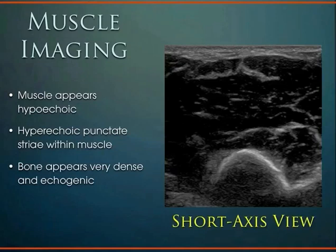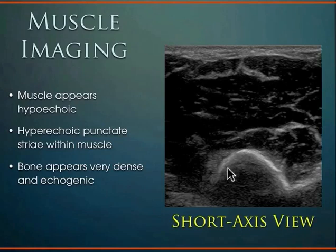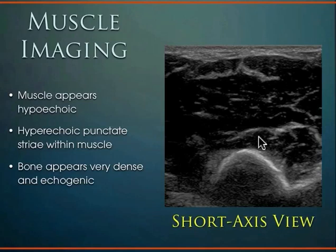In short axis — also called transverse or axial view — you see more hypoechoic muscle structure with deep bony structure deep to it. The connective tissue dots in short axis view are referred to as the 'starry night pattern' — just that interwoven connective tissue seen when looking at muscle in short axis.